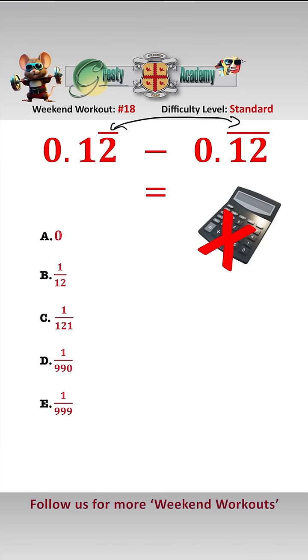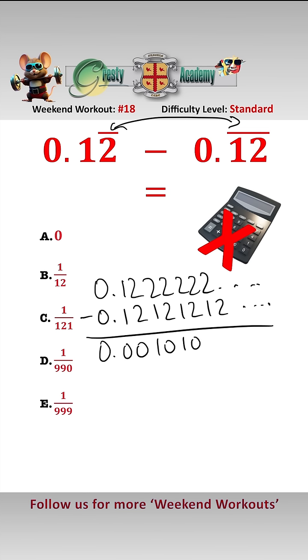The bar above the numbers means those numbers are recurring. So in actual fact, this question is asking: 0.1222... take away 0.121212... If we take these away, we get 0.00101010..., which again is another recurring decimal.